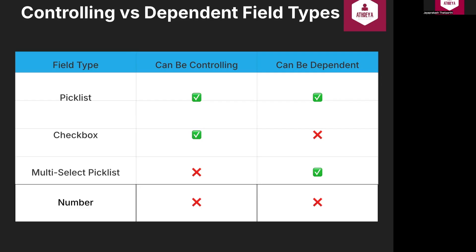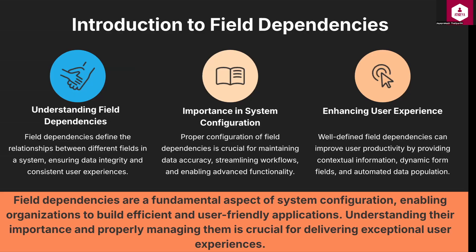Record types and page layouts can also influence which picklist values are shown, but are configured separately. Always plan your controlling and dependent fields with usability and scalability in mind. Use meaningful value sets and avoid creating overly complex chains of dependencies. Properly configuring field dependencies enforces data consistency by guiding users to valid combinations, simplifies data entry in complex business processes, and supports automation where downstream logic depends on field values being predictable. Well-implemented field dependencies reduce visual clutter, streamline navigation through forms, and allow the system to react in real-time — think of it as designing a form that thinks along with the user.